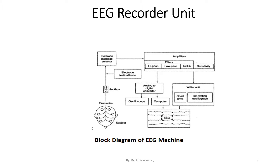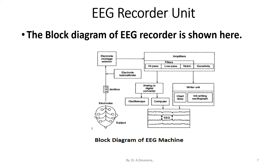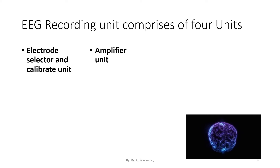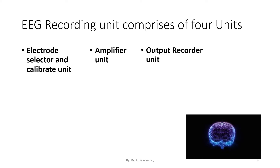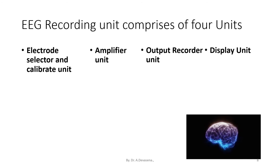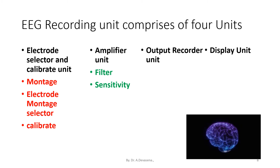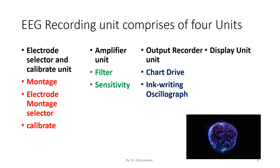The block diagram of the EEG machine is shown here. EEG recording unit comprises of four units: electrode selector and calibrate unit, amplifier unit, output recorder unit, and display unit. The electrode selector and calibrator unit comprises of montage, electrode montage selector, and calibrate montage unit. The amplifier unit comprises of filter and sensitivity unit. The output recorder unit comprises of chart drive, ink writing, and oscilloscope. The display unit comprises of computer and oscilloscope.